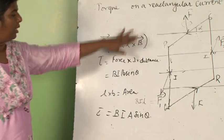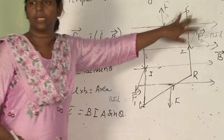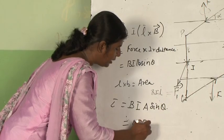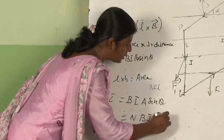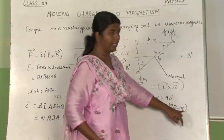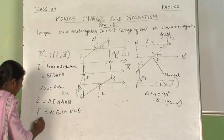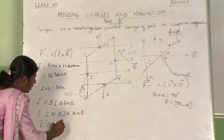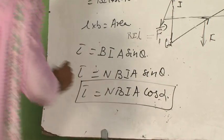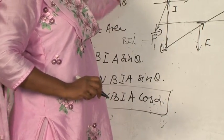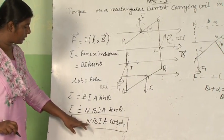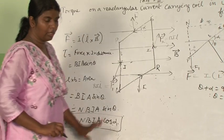This is for a single coil PQRS. If N number of turns are there, then torque equals N·B·I·A·sin θ. From the figure, since θ equals 90 minus α, sin θ equals cos α. So torque will be N·B·I·A·cos α, where α is the angle between the current carrying coil and the magnetic field. Therefore, torque is equal to N·B·I·A·cos α.